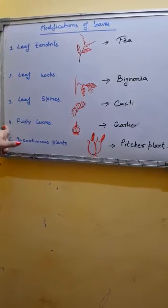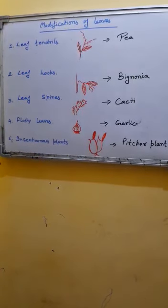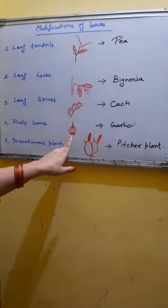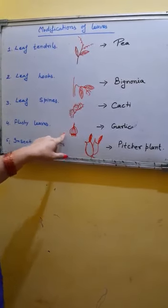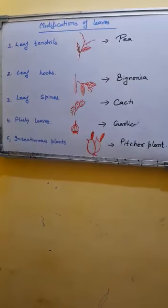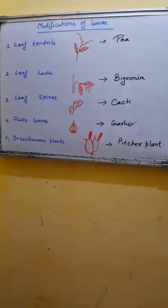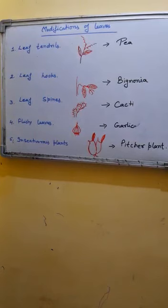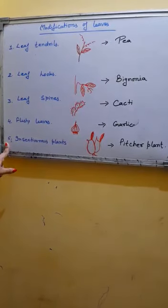The next leaf modification is fleshy leaves. This modification is to store food. As we studied in modification of stem, there is a condensed disk-like stem structure, and above that the leaves become fleshy and store food, as in the case of garlic and onion. Fleshy leaves are arranged in a compact manner on the condensed stem. Garlic and onion are the examples.